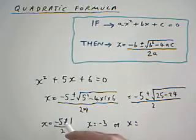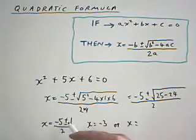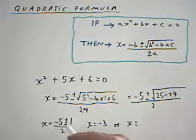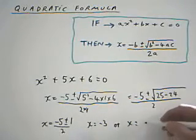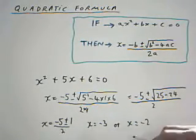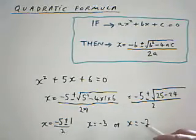Or x equals, we'll do the positive one this time, minus 5 plus 1 is minus 4, minus 4 divided by 2 is minus 2. That's our two roots, minus 3 and minus 2.